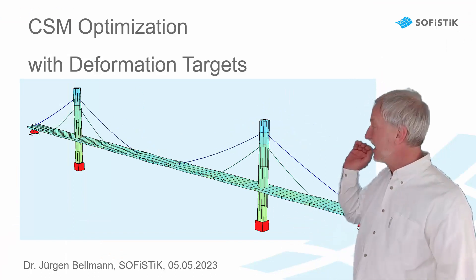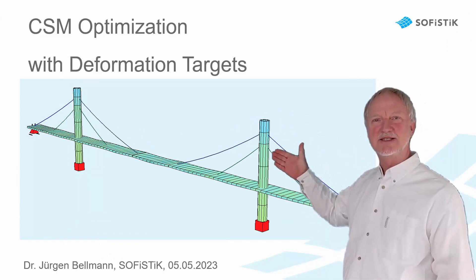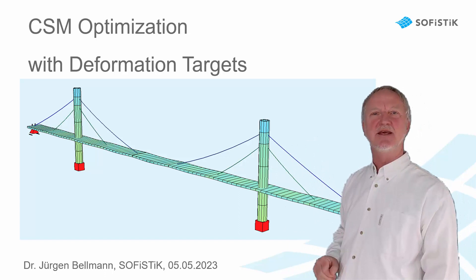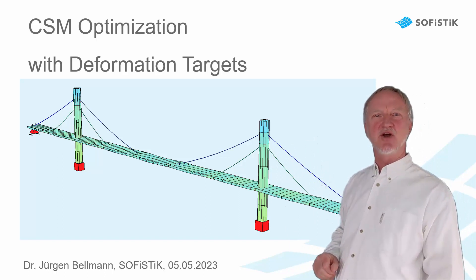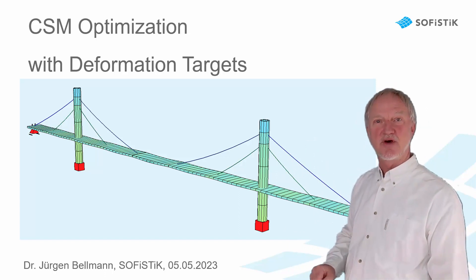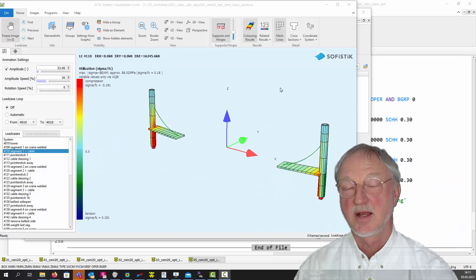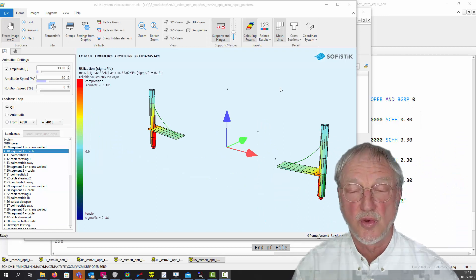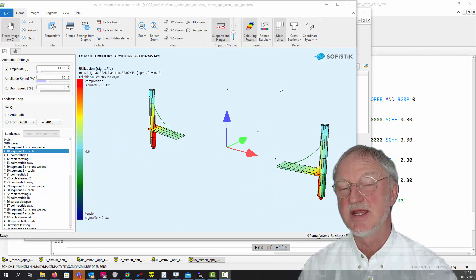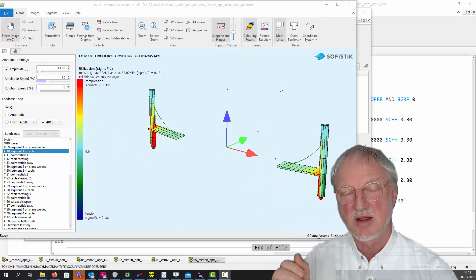So again, at the end we now have a perfectly straight bridge, and it is not necessary to make a further pre-camber. Now one word about why it is not so easy for the CSM program to handle deformation targets.